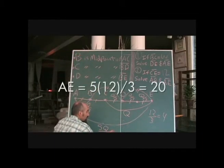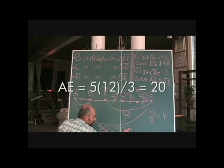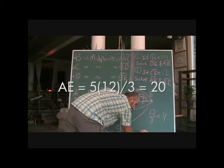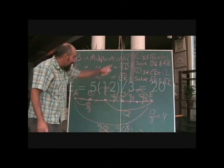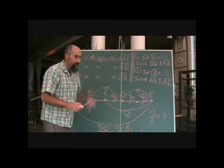And if we plugged it in here, 5 times 12 over 3. Well, 3 goes into 12 4 times, 5 times 4 is 20. And that's the power of solving problems with variables.